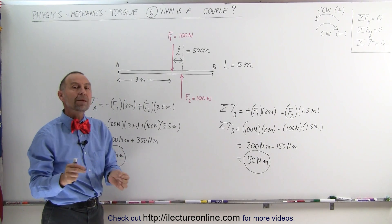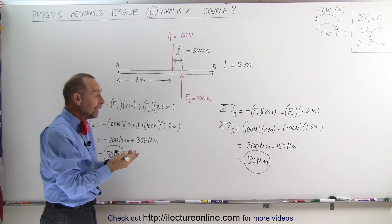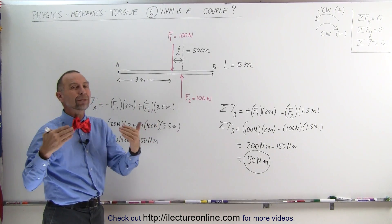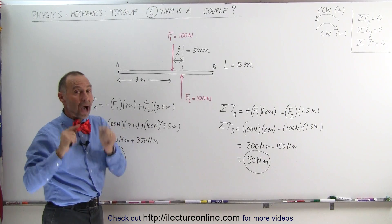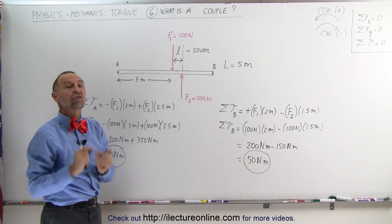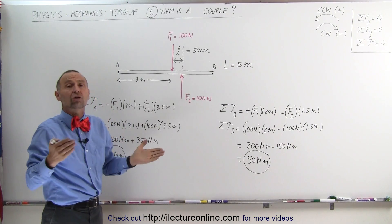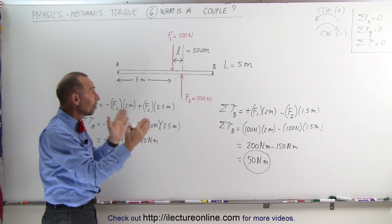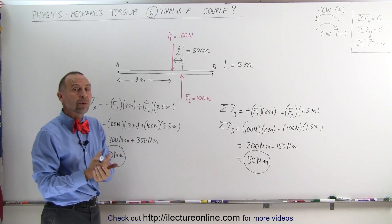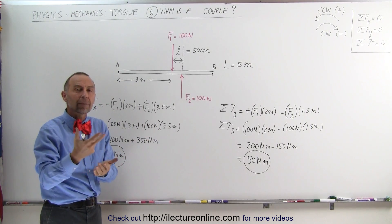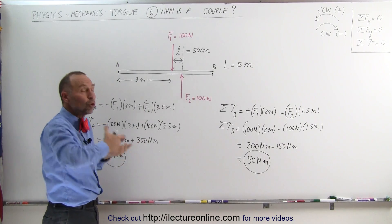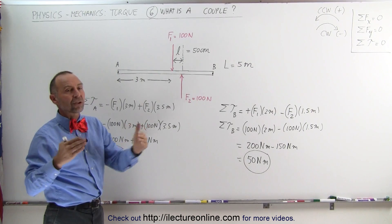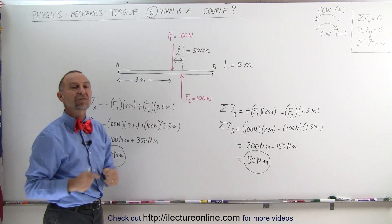That's what we mean by a couple. A couple is the torque caused on an object by two forces that are equal in magnitude, opposite in direction, and some distance apart from each other. The result would be the same regardless of the distance. That's what we call a force couple — the torque caused by two forces of equal magnitude and opposite direction acting on the same object.